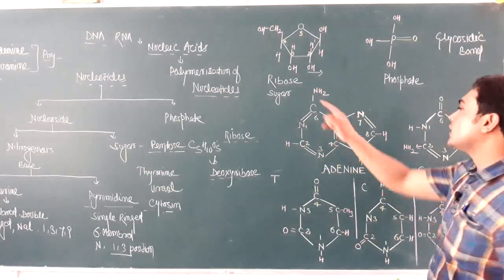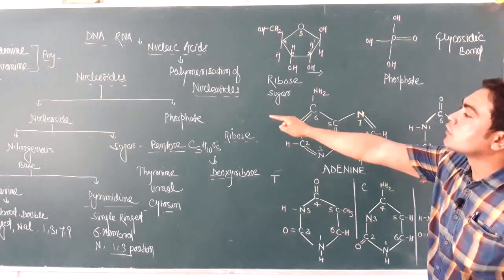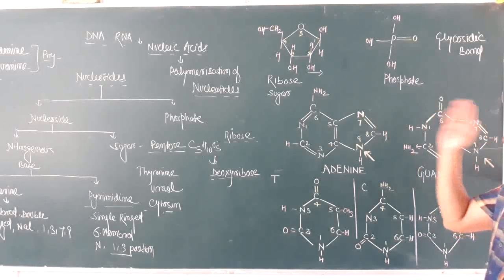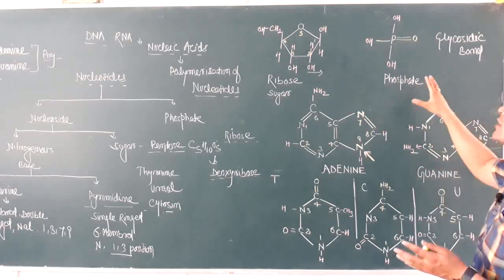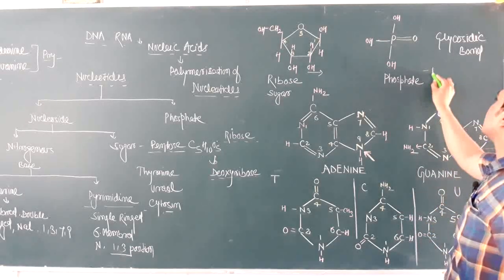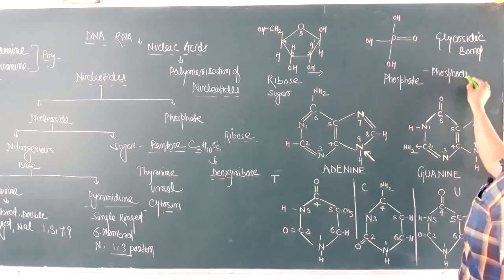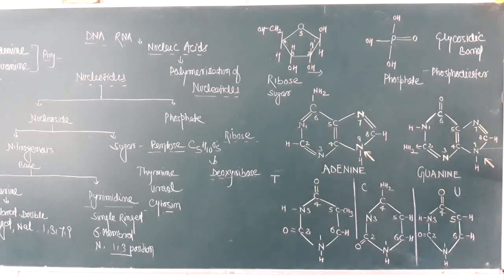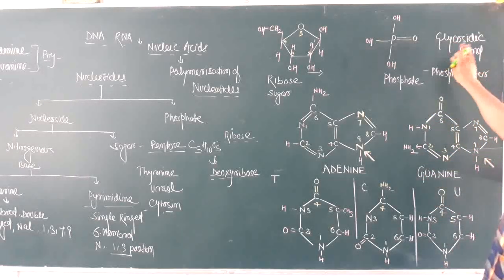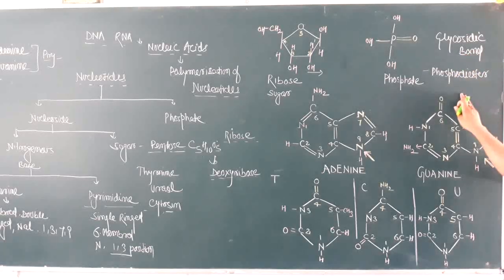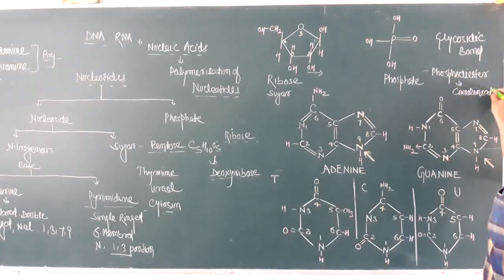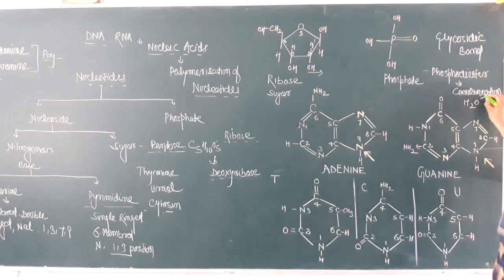When nucleosides are formed, the phosphate group attaches to these nucleosides, and when nucleosides attach with phosphate they form nucleotides. The bond formed between the nucleoside and phosphate is called a phosphodiester bond. Both the glycosidic bonds and phosphodiester bonds are formed by a condensation mechanism involving the removal of a water molecule.